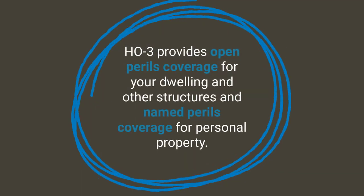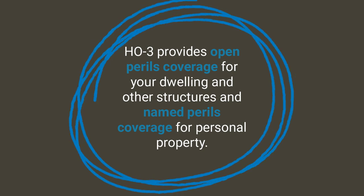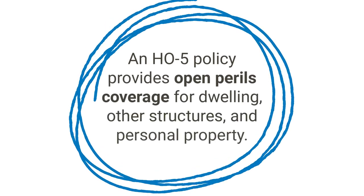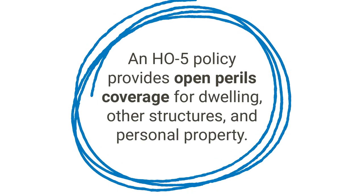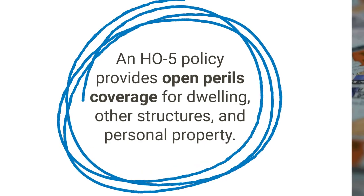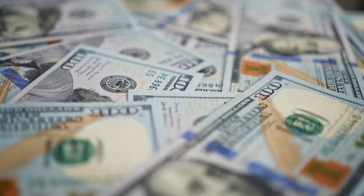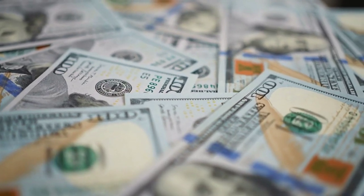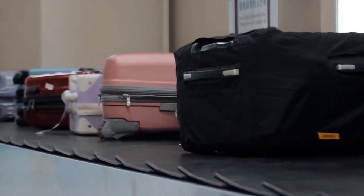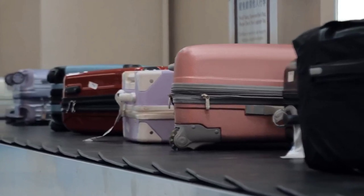An H03 provides open perils coverage for your dwelling and other structures, and named perils coverage for personal property. An H05 policy provides open perils coverage for dwelling, other structures, and personal property. Policyholders typically pay a higher premium for an H05 in return for broader coverage, such as losing your suitcase or accidentally knocking your television over.